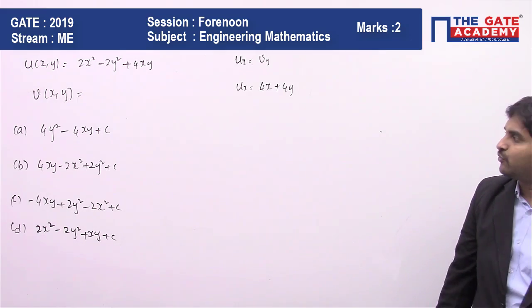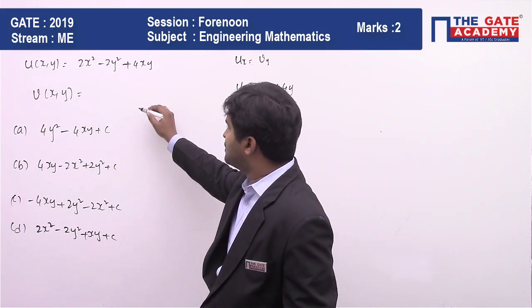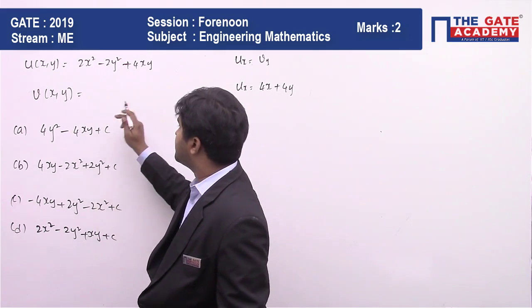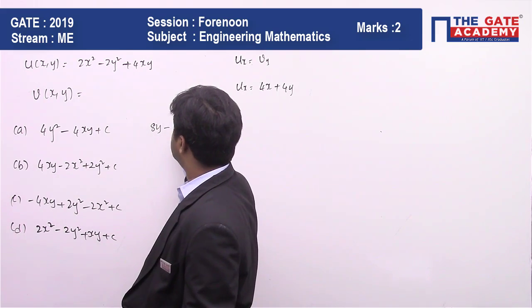Let us check which of these are going to satisfy v_y. If I consider option A as v, then the derivative with respect to y is going to be 8y - 4x. So this is not going to satisfy.